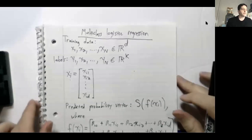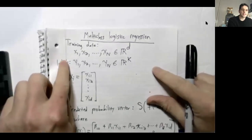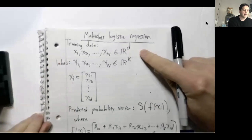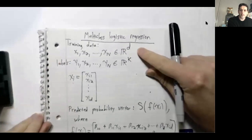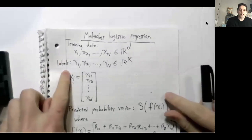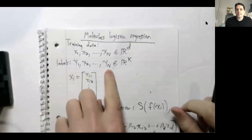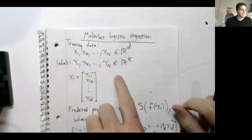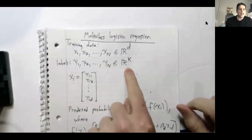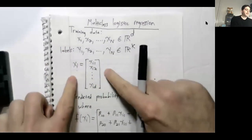Let's review the framework for multi-class logistic regression. We're given training data consisting of a list of feature vectors x1 through xn. Each feature vector belongs to R^d, and we're given corresponding one-hot encoded label vectors y1 through yn. If we're doing classification with k classes, then each one-hot encoded label vector is an element of R^k.